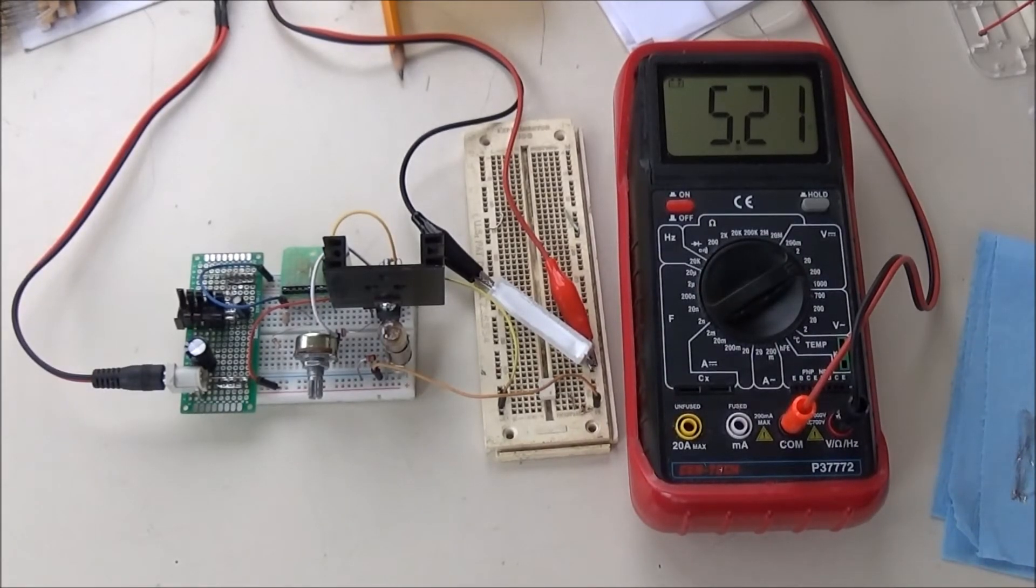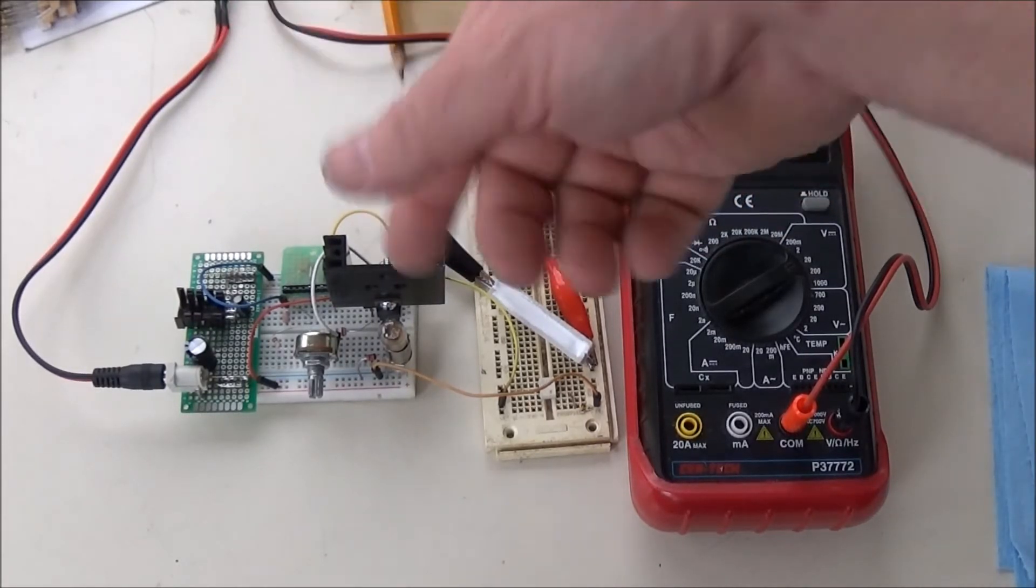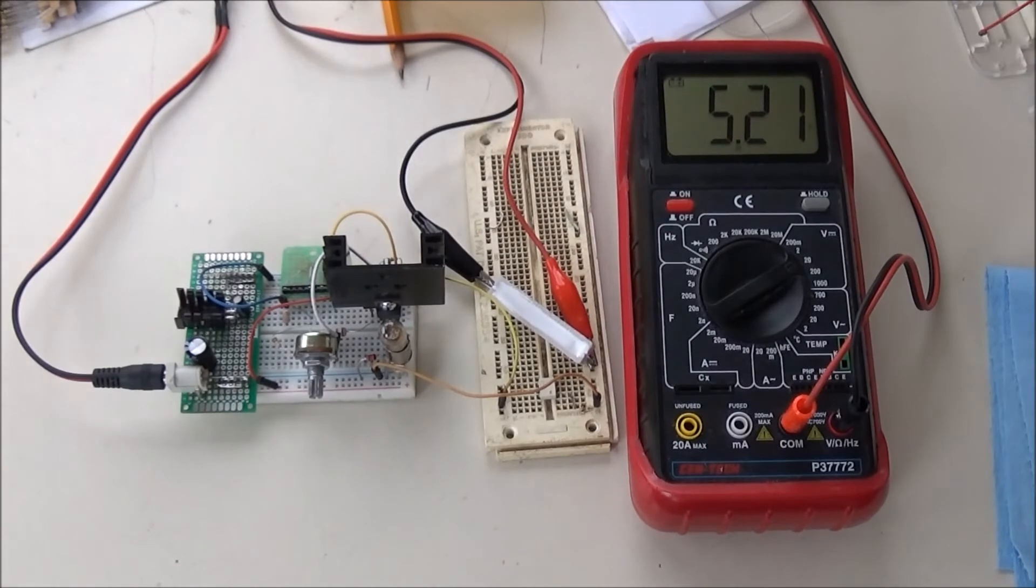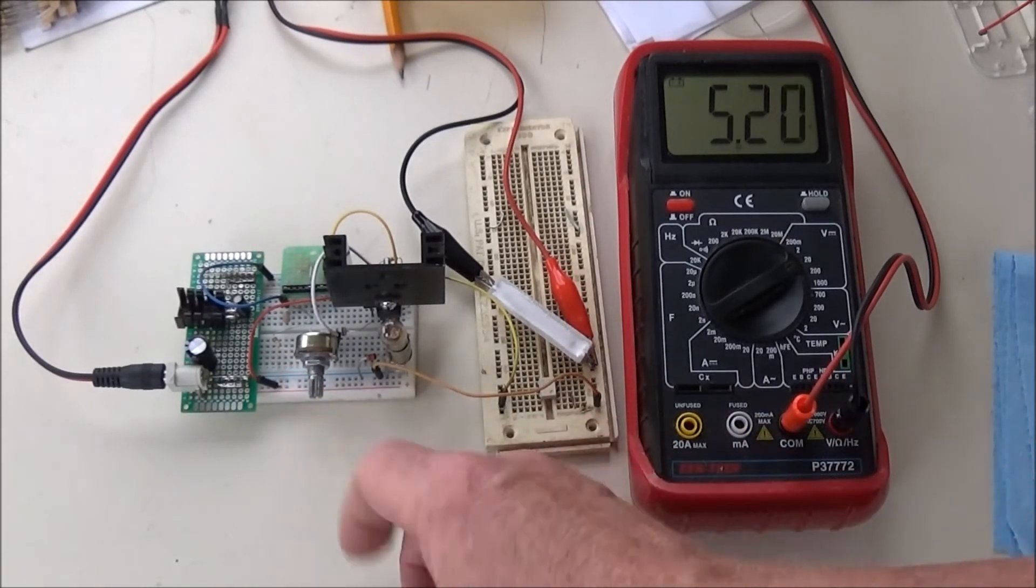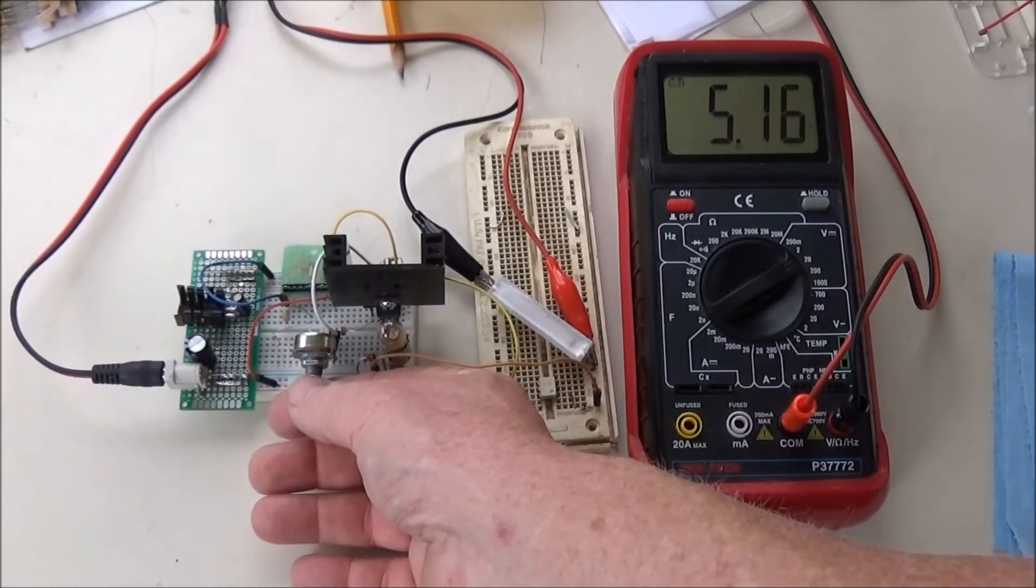Not much to it. It's similar to the voltage regulator, but it has two TIP-41s configured as an NPN Darlington. Some resistance feedback, and I put in this potentiometer so I could adjust the current output.